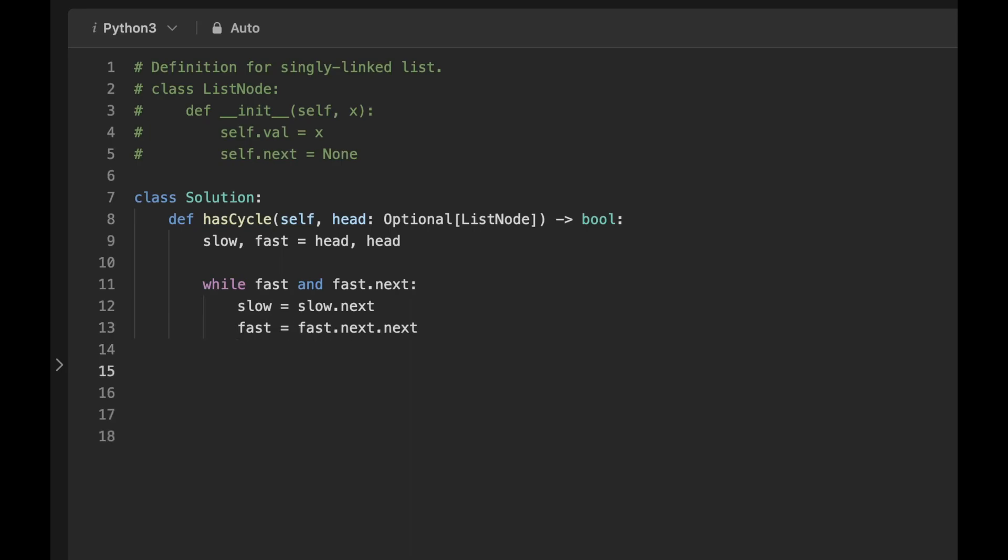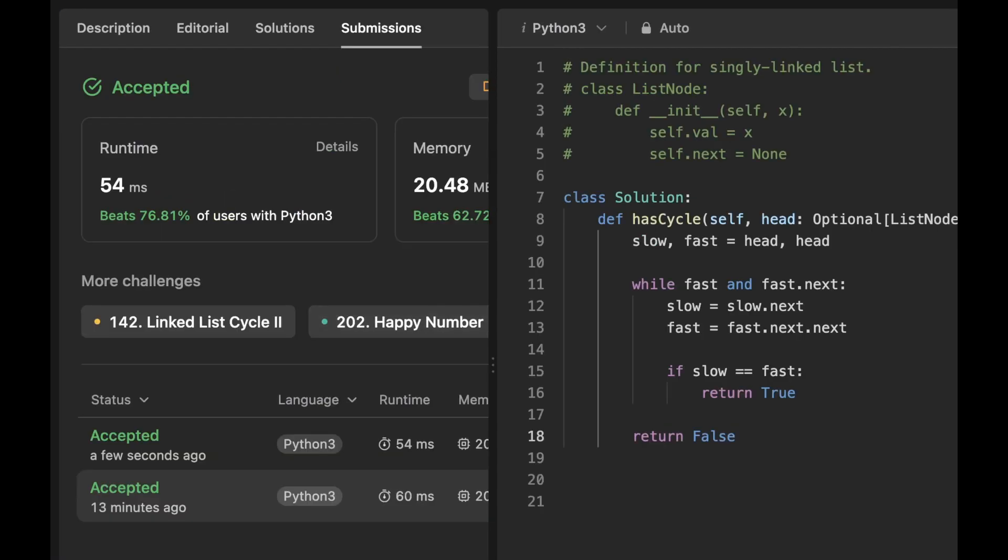At each iteration, we want to check if slow equals fast. If they are, we simply return true. And if we get out of this while loop and this condition has not become true, it means that there is no cycle in the list. So we can return false. Let's see if this works. As you can see, it does work.